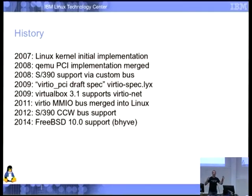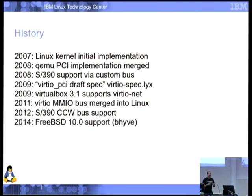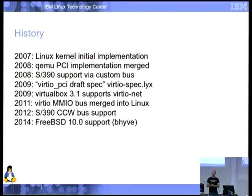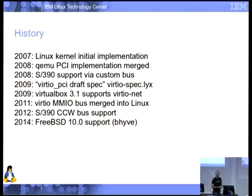It was the year after that we decided PCI was where the action was, so we were going to create an actual spec — nominally independent of the implementation in QEMU and Linux — that would give you everything you need to implement something compatible. It was called the VirtIO PCI Draft Spec, and I did it in LaTeX because I like to confuse everyone by using different technologies. And it was also the year VirtualBox 3.1 came out and supported VirtioNet, giving us our first completely independent implementation of VirtIO.